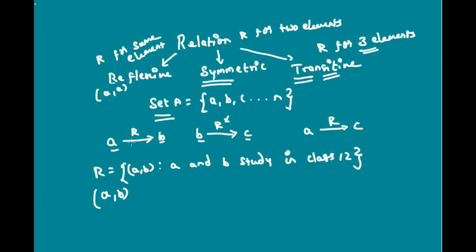That is, if this relationship is true for (A, B) and (B, C), then it is obvious that it is true for (A, C) also, because if A and B are going to study in class 12 and B and C are also studying in class 12, then it is true that A and C also study in class 12. So, this is a transitive relationship.